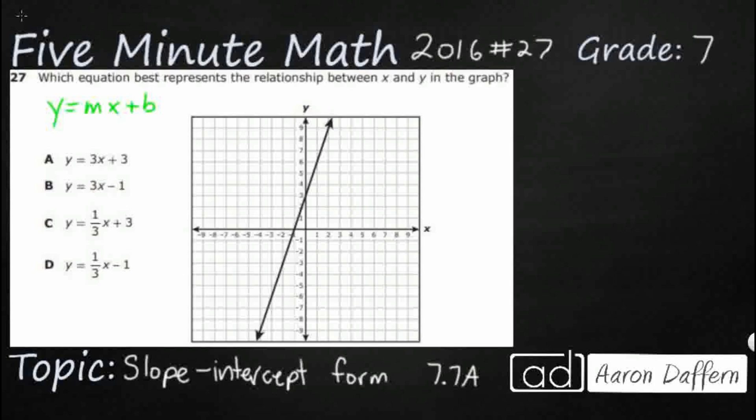We're pretty comfortable with the y and the x, especially since we have the graph in front of us, but we need to figure out this m and this b. So this m represents the slope. What is this slope? We can figure that out just by looking at the graph. One way I always remember is rise over run.